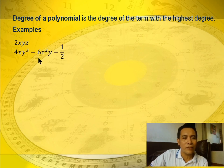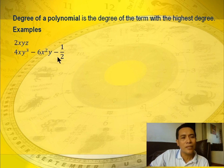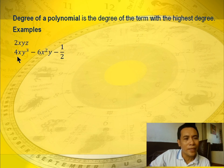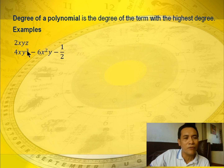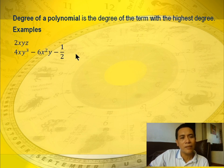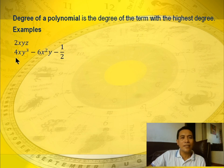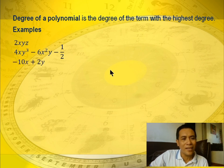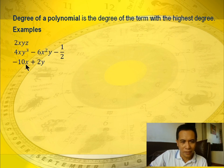Second example: 4xy cubed minus 6x squared y minus 1 half. This is a trinomial. The degree of the first term is 1 plus 3 equals 4. The second term has degree 3. The third term has degree 0. So the degree of this polynomial is 4. Another example: negative 10x plus 2y — first term degree 1, second term degree 1, so the degree of this polynomial is 1.